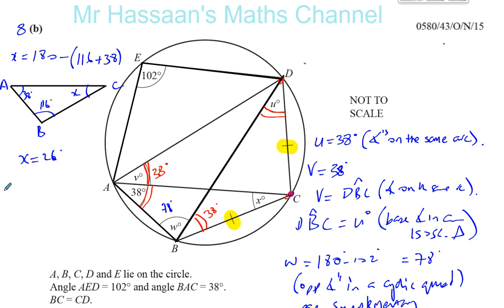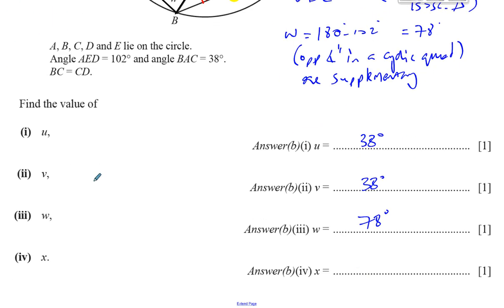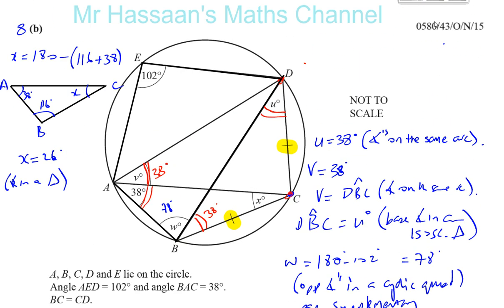And you can say the reason is angles in a triangle add up to 180 degrees. So X equals 26 degrees. And there we have the end of question 8, part B. Thank you very much for listening and watching.